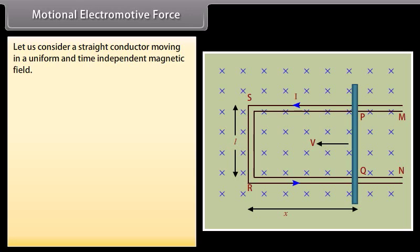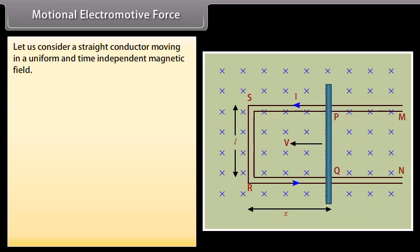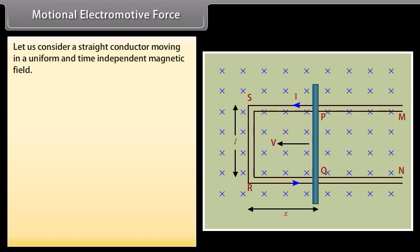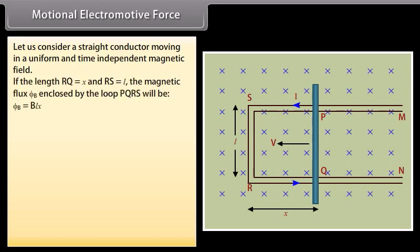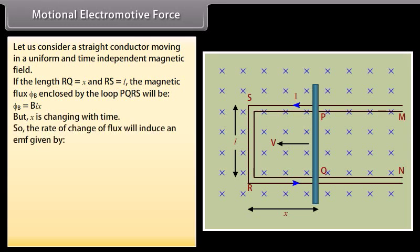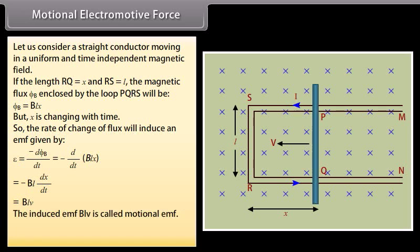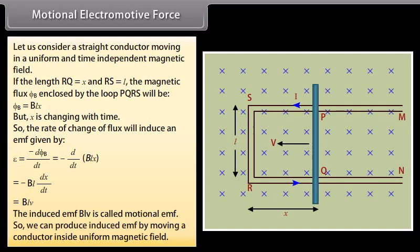Motional Electromotive Force. Consider a straight conductor moving in a uniform and time-independent magnetic field. Let a rectangular conductor PQRS in which the conductor PQ is free to move with constant velocity V in a uniform magnetic field B perpendicular to the plane of the system. If the length RQ is x and RS is L, the magnetic flux Φ_B enclosed by the loop PQRS is equal to BLx. Since x is changing with time, the rate of change of flux induces an EMF = −d(BLx)/dt = BLV. This induced EMF BLV is called motional EMF, produced by moving a conductor inside a uniform magnetic field.